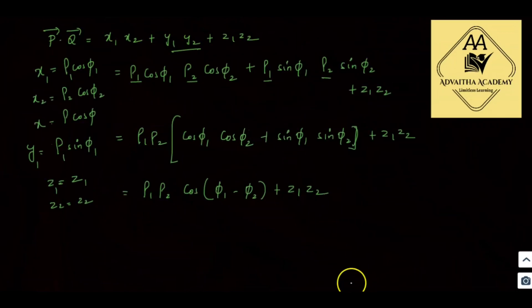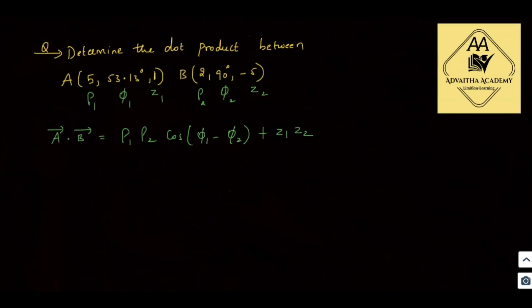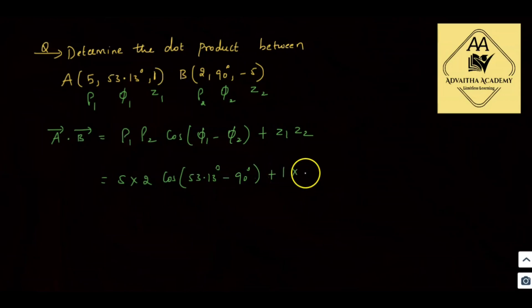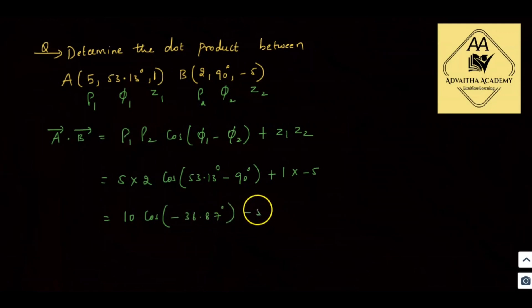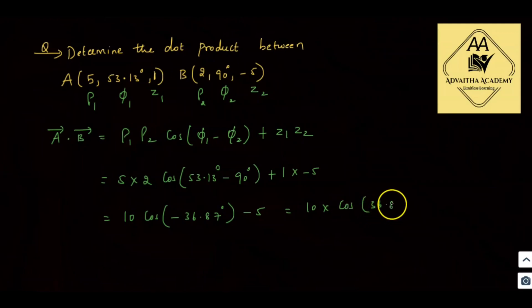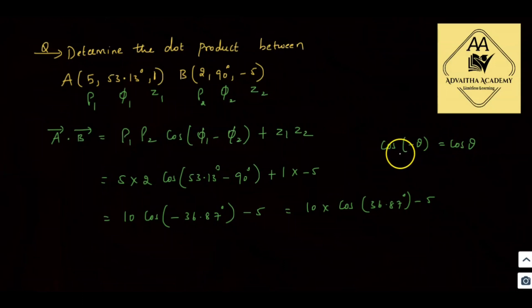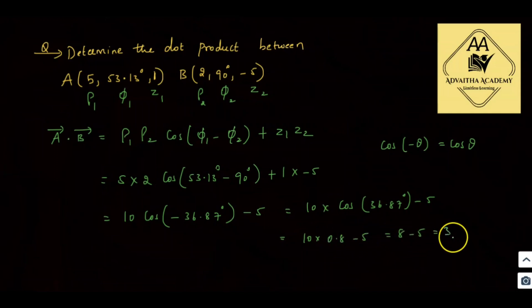So substituting: rho1=5, rho2=2, cos(53.13° minus 90°) plus z1=1 into z2=-5. This gives 10·cos(36.87°) minus 5. Now, cos of minus theta equals cos theta since cosine is an even function. cos(36.87°) is around 0.8. So 10 × 0.8 minus 5 = 8 minus 5, which equals 3. That is the dot product answer.